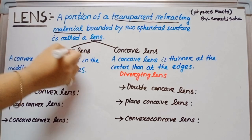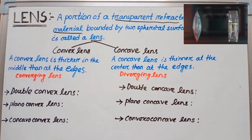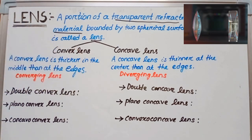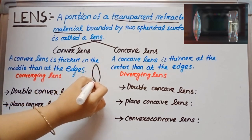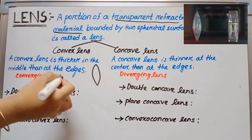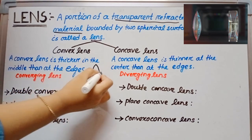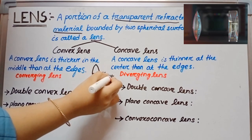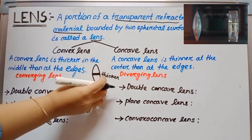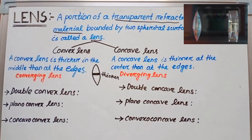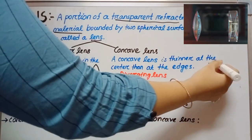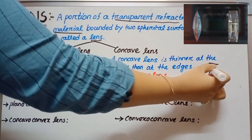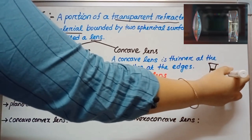A lens is of two types. One is a convex lens and another one is a concave lens. In the case of a convex lens, the middle part is thicker compared to the ends. Whereas in the case of a concave lens, the middle part is thinner compared to the ends.